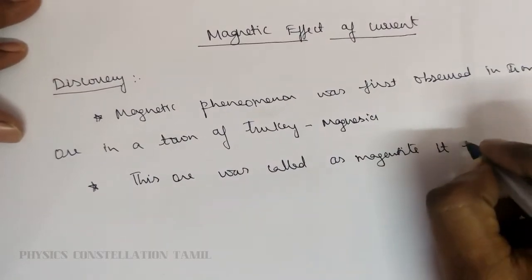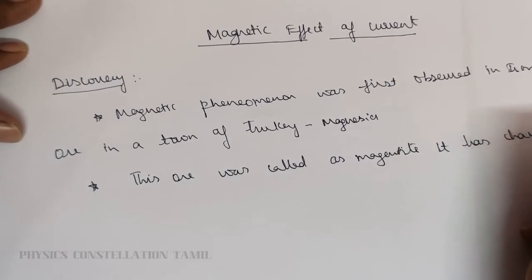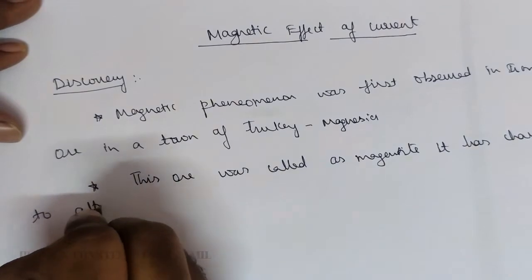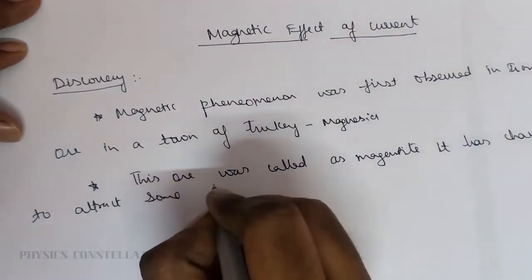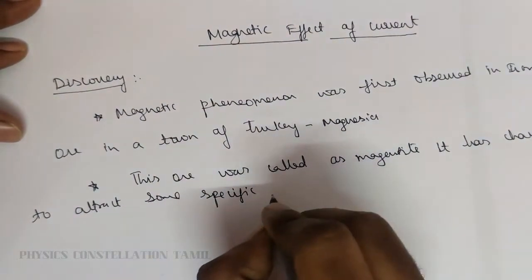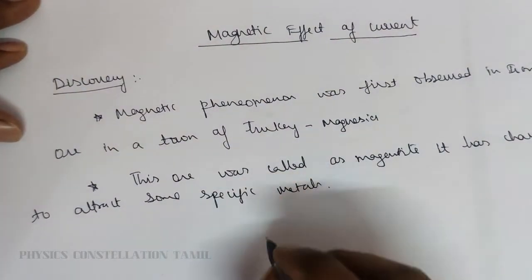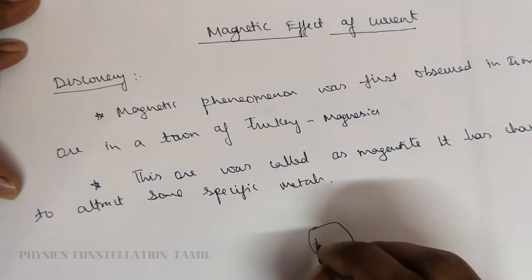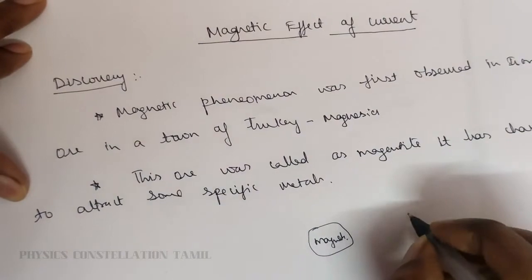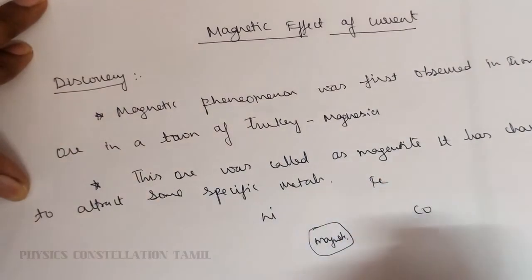Magnetite has characteristics to attract some specific metals. For example, we can say cobalt, iron, nickel, and copper.